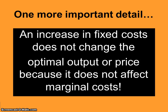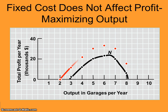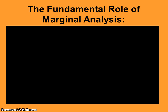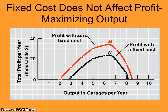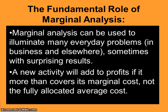One more important detail: an increase in fixed cost does not change the optimal output or price, because it does not affect marginal costs. For Al's Garage, if fixed costs increase by $10,000, that changes total costs at every level of output — but the profit-maximizing level remains the same at six garages in either scenario. Marginal analysis can illuminate many everyday business problems; a new activity adds to profits if it more than covers its marginal cost, not its fully allocated average cost.